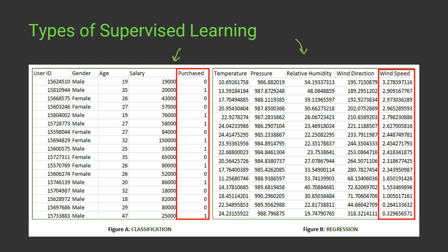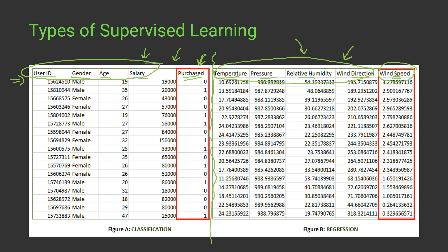The first dataset is an employee dataset with employee ID, gender, age, and salary, and we predict whether the employee will purchase a particular item or not. While training, we have both input and output — that's the labeled dataset. The second dataset has temperature, pressure, relative humidity, and wind direction as inputs, and we predict the wind speed. Both datasets have input as well as output, which is why they are called labeled datasets.